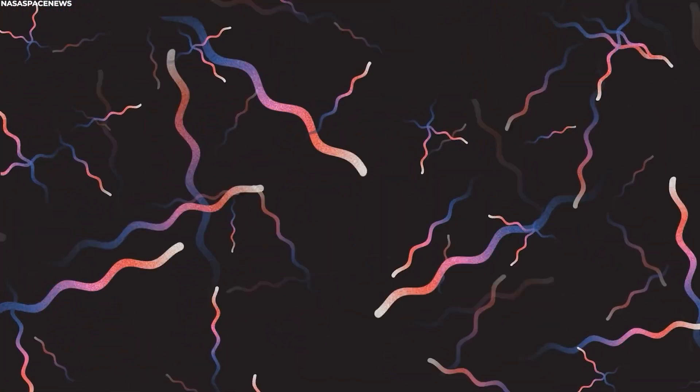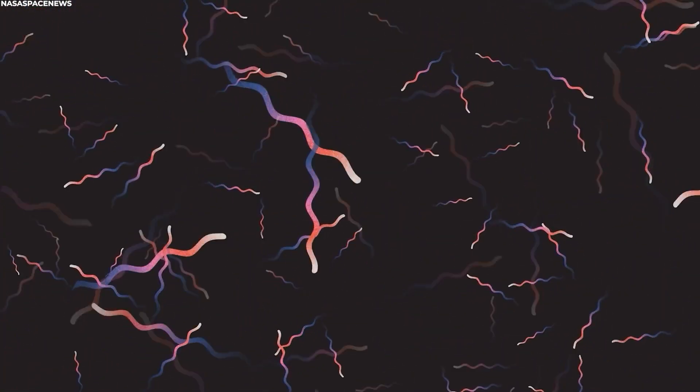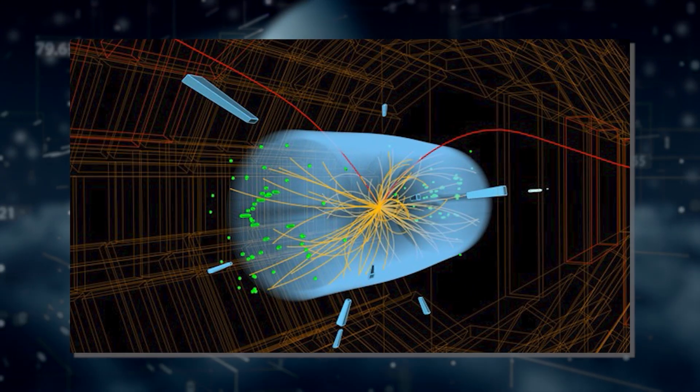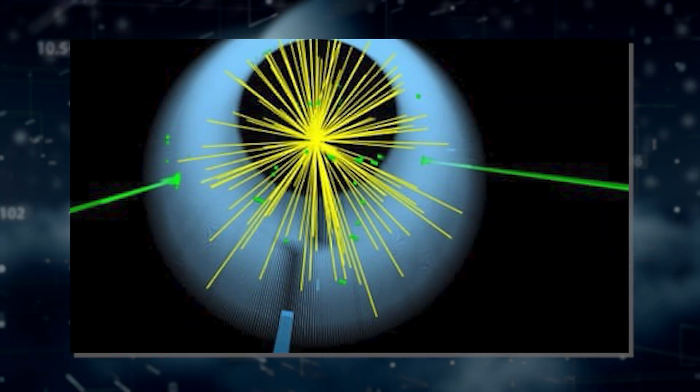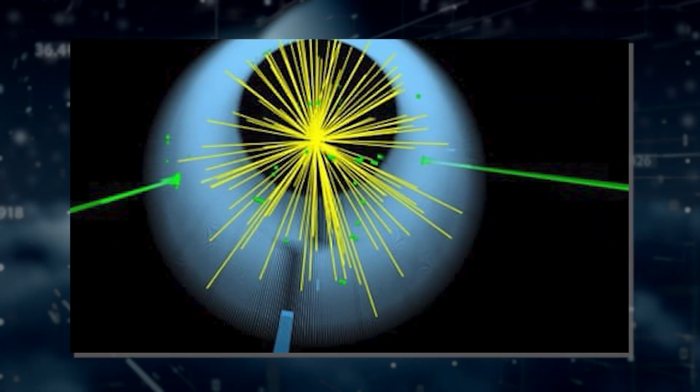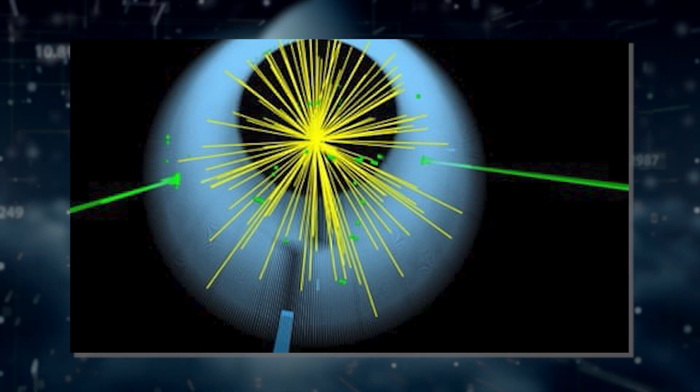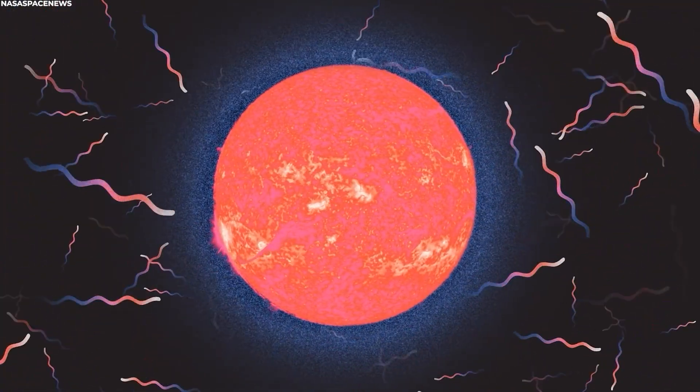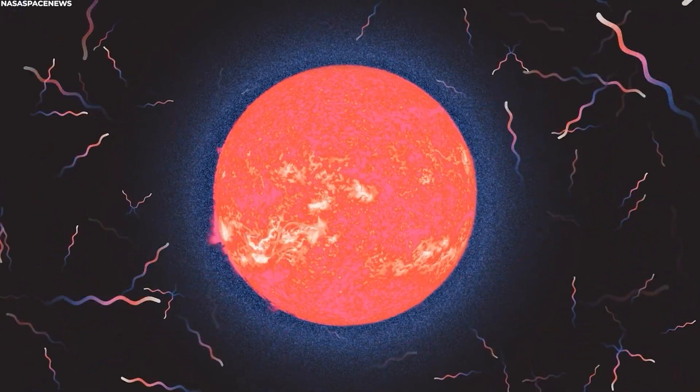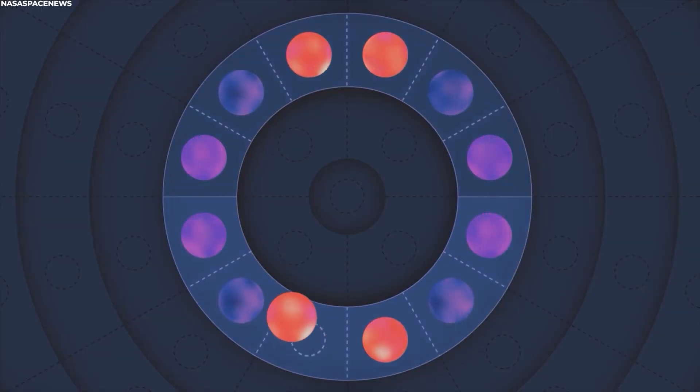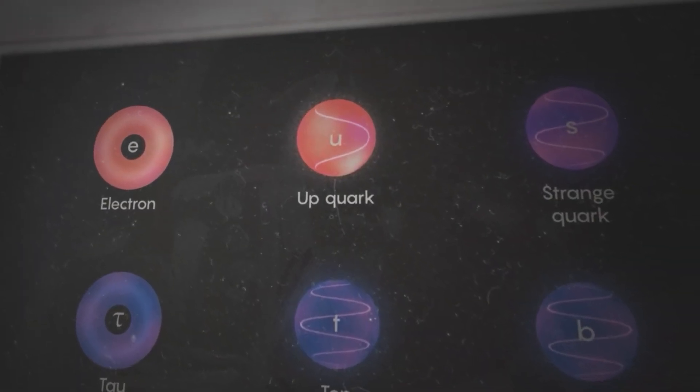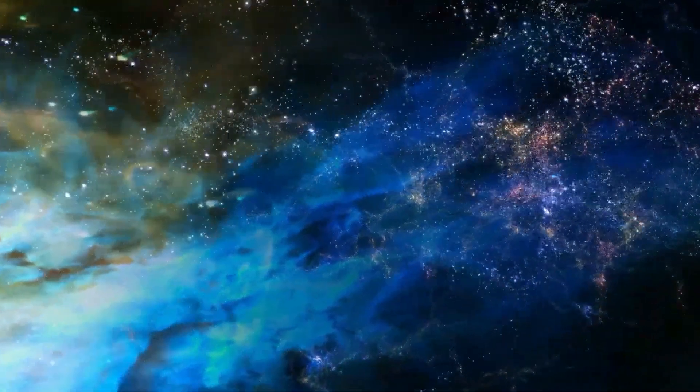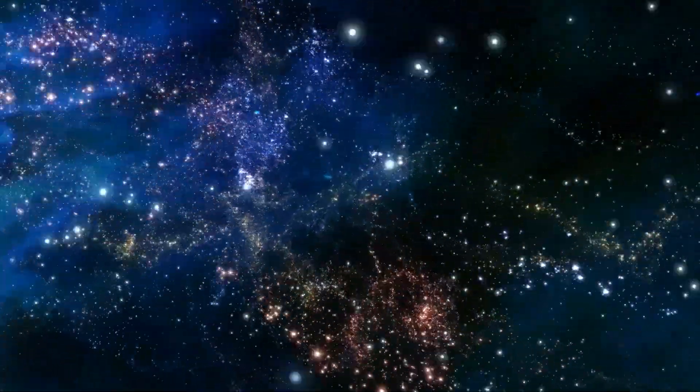Leptons, on the other hand, are a different set of fermions. They do not engage in the strong nuclear force, unlike quarks. Leptons include familiar particles like electrons that are found in atoms, muons, the heavier cousins of electrons, and neutrinos, the neutral, nearly massless particles that barely interact with matter. Leptons are fundamental and indivisible, not made up of smaller particles. Both quarks and leptons are governed by the rules of quantum mechanics and are part of the standard model of particle physics, which describes the fundamental particles and their interactions in the universe.